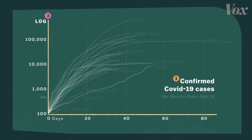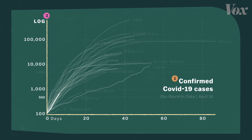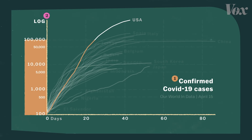That means that there's no fixed amount of space on this chart for a certain number of cases. So the first 100,000 cases take up this much space, and then the next 100,000 cases get just this much. The higher the numbers, the more visibly squished they become on a log scale.